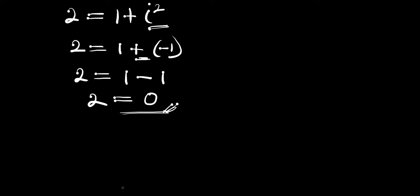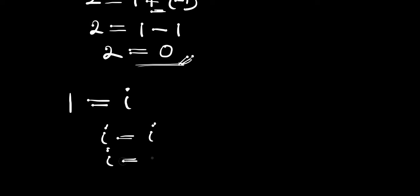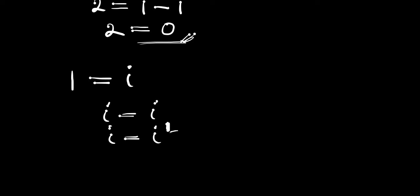Now I have another interesting one here. Let's also show that 1 equals i. We are going to do the same thing — you find out where we have gotten it wrong. Now we know that i equals i. From here I can rewrite this as i equals i to the power of 1. i to the power of 1 is i. So we can rewrite this 1 as 4 divided by 4, giving us i equals i to the power of 4 divided by 4. And 4 divided by 4 is 1.